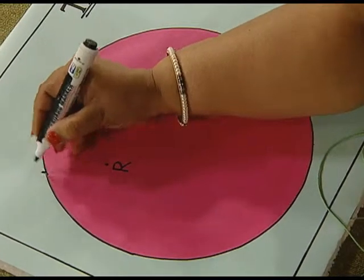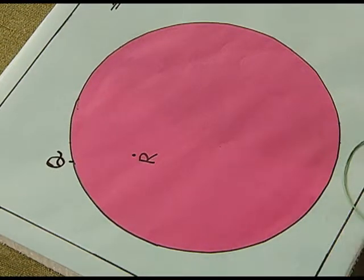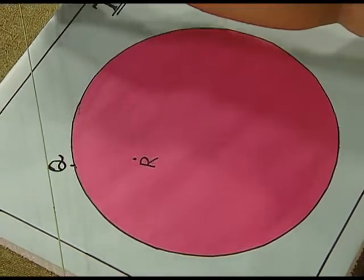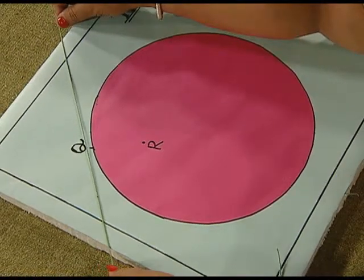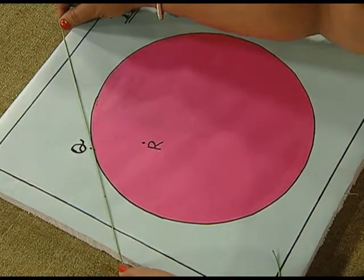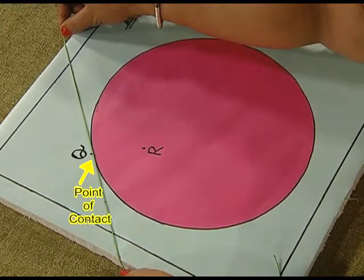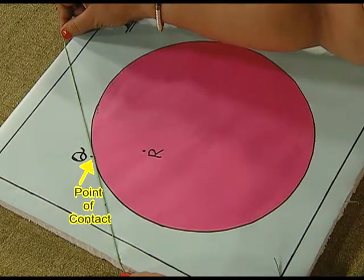What happens if I take this point on the circle? Suppose I take this point as Q. Let us consider this thread as representing a line. We can have one tangent at point Q. Q is the point of contact, and we observe that only one tangent is possible when the point is taken on the circle.